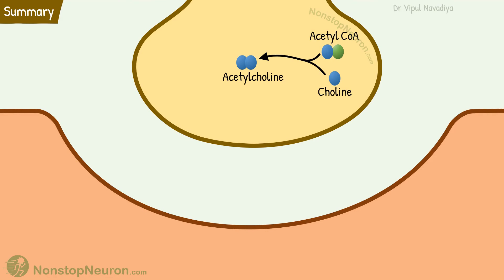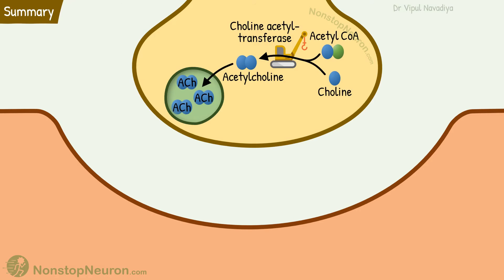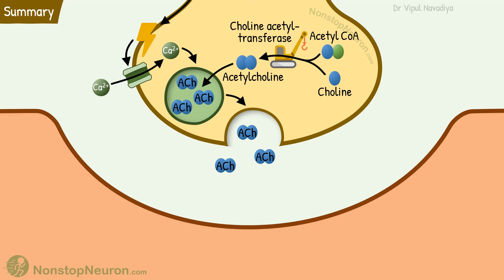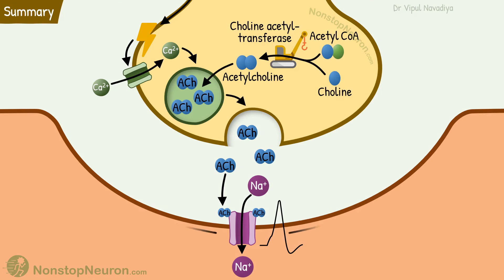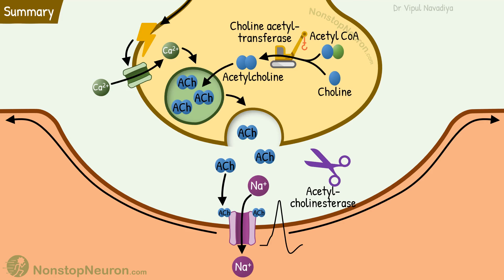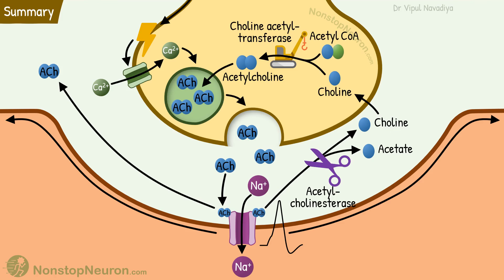Acetylcholine is synthesized in the cytosol from acetyl coenzyme A and choline by the action of choline acetyltransferase, then transported into the vesicle. When the impulse reaches the nerve terminal, voltage-gated calcium channels open. The resultant influx of calcium causes the release of acetylcholine into the synaptic cleft. Here, acetylcholine stimulates the receptors causing their opening, so sodium ions diffuse in and an action potential is generated. The action potential spreads along the membrane eventually causing muscle contraction. The action of acetylcholine is terminated by acetylcholinesterase, which breaks it into acetate and choline. Choline is transported back into the nerve terminal for synthesis of more acetylcholine. Diffusion of acetylcholine out of the synapse also contributes to termination of action.